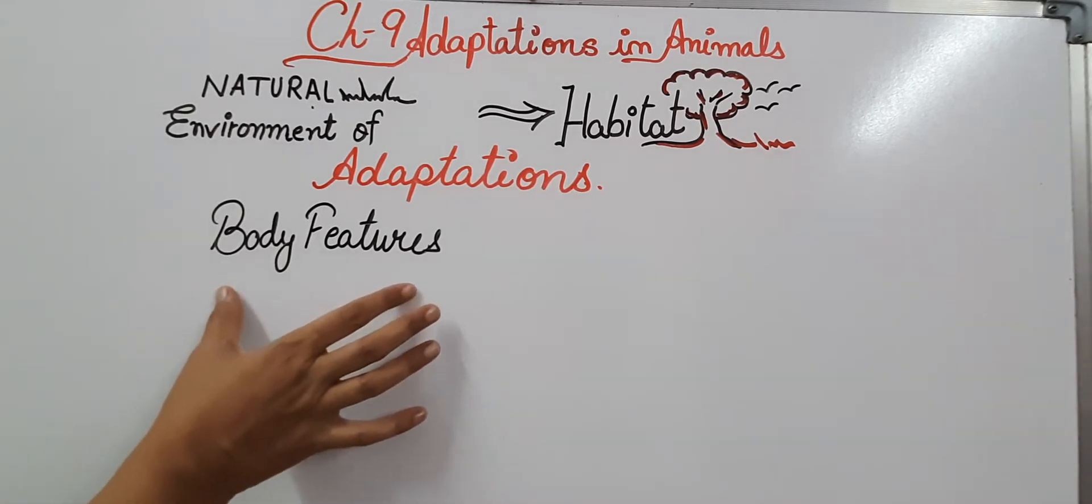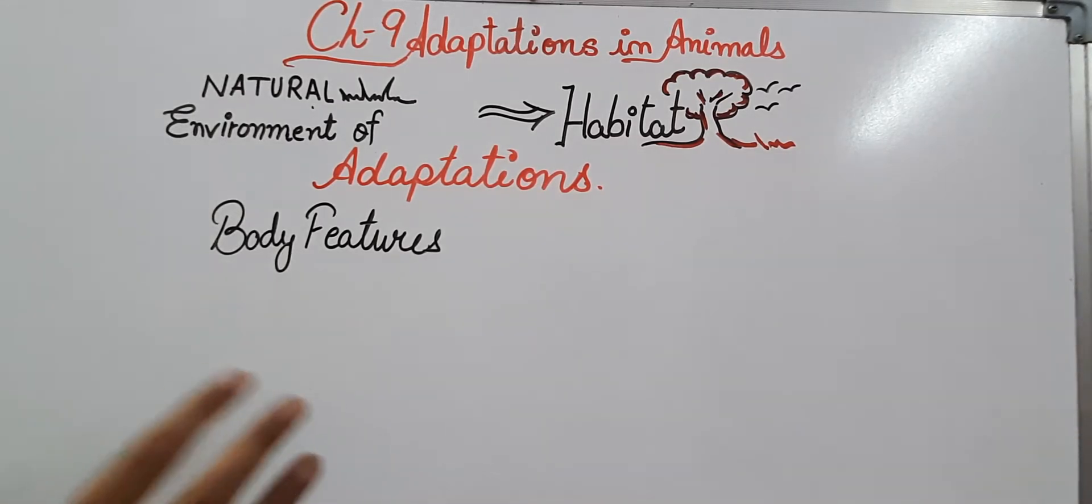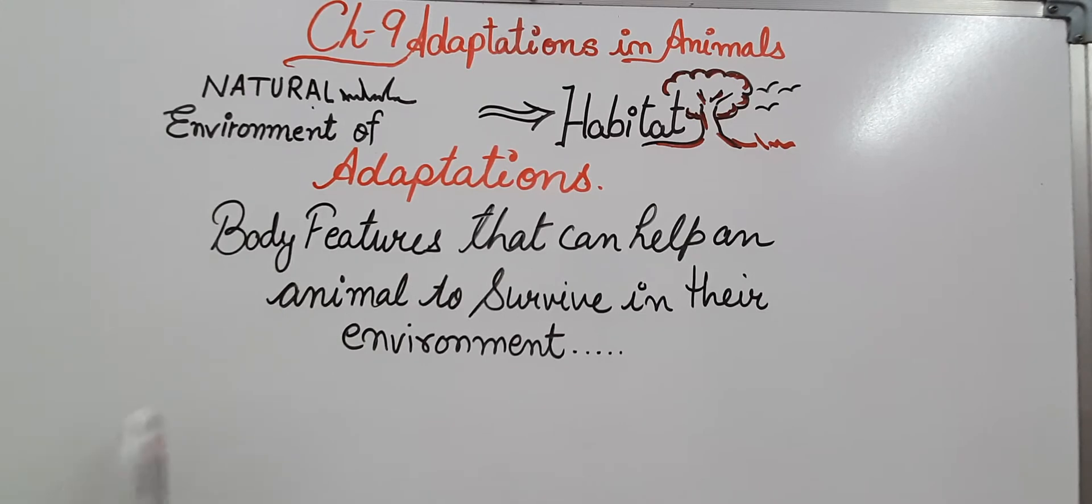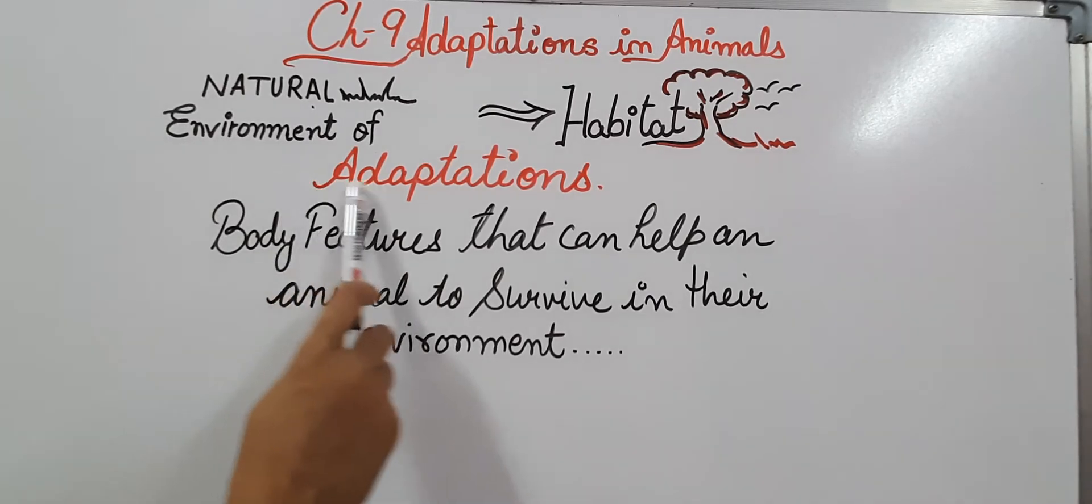Because the body features present in that animal are favorable or suitable for the desert. So any body feature which can help the animal to survive in their environment is known as adaptation.